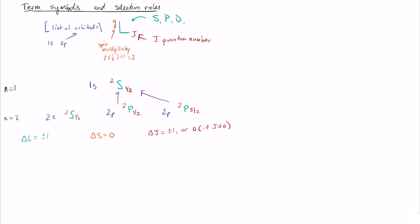For the third transition — 2p three-halves to 1s one-half — this is again p to s, so delta l equals minus one, allowed. Delta s is still zero, also allowed. And j goes from three-halves to one-half, corresponding to delta j equals minus one, which is also allowed. So these are the two transitions we will actually see in the atomic spectrum: doublet P one-half to doublet S one-half, and doublet P three-halves to doublet S one-half.